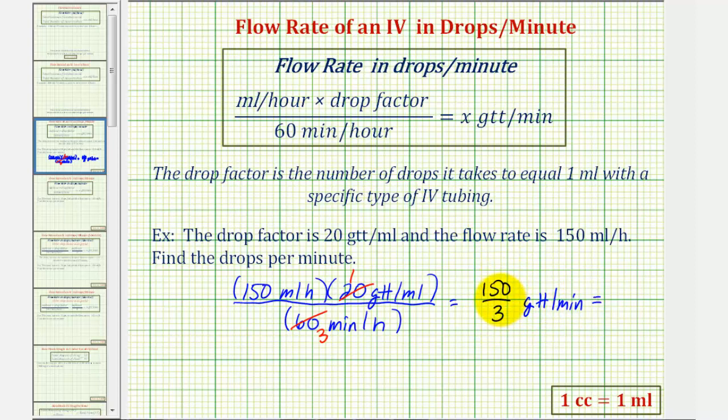And now we'll go ahead and find this quotient. By hand, we would have 150 divided by three. There are five threes in 15, five times three is 15, subtract, bring down the last digit of zero. There are zero threes in zero. Zero times three is zero, we subtract, we have zero. So our final answer would be 50 drops per minute.